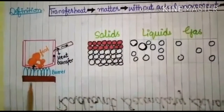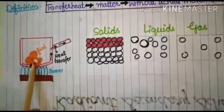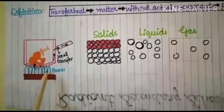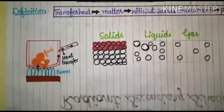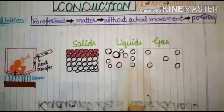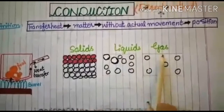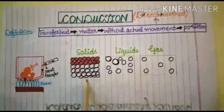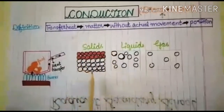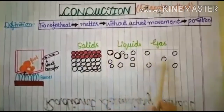This can be explained with this example: there is a burner, a pan, and inside the pan there is food. The heat is transferring from one part of the pan to the other. Conduction occurs in all three states of matter — solids, liquids, and gases — but it is more prominent in solids.